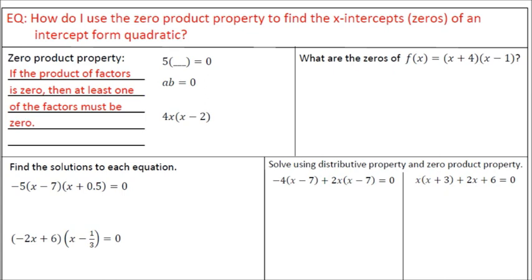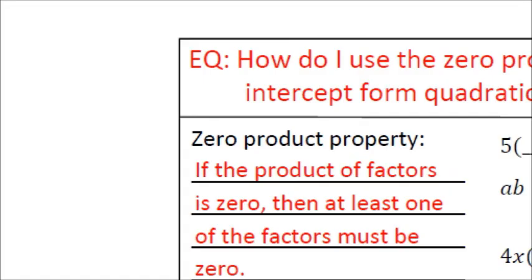In this video we're going to answer the essential question: how do I use the zero product property to find the x-intercepts or zeros of an intercept form quadratic? We've learned that x-intercepts and zeros mean the same thing. We've been estimating how to find those, and now we're going to see that if a quadratic is written in intercept form, we can find the x-intercepts really quickly.